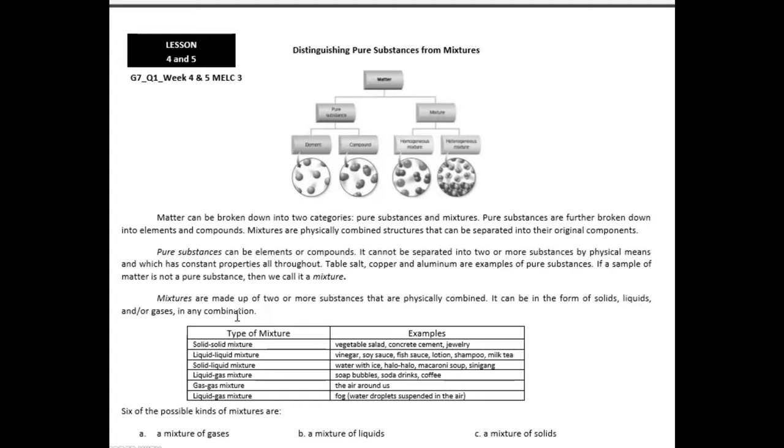Another is the heterogeneous mixtures. Substances are not evenly distributed throughout the mixture. Some regions have different properties than others. Example is a vegetable salad. This is the type of mixture where you can still see the ingredients like lettuce, tomato, onion, and other things. So that is an example of heterogeneous mixture.